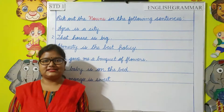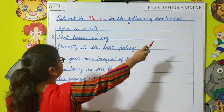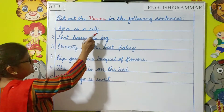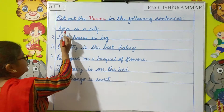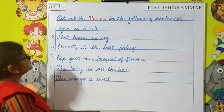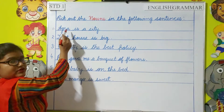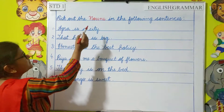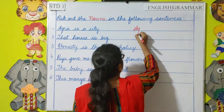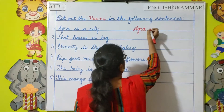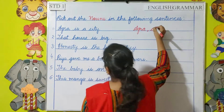Moving on to our next exercise: pick out the nouns in the following sentences. Number one: Agra is a city. So you have to pick out the nouns. Agra and city. Agra is a proper noun because it is a particular name of a place, and city is a common noun.